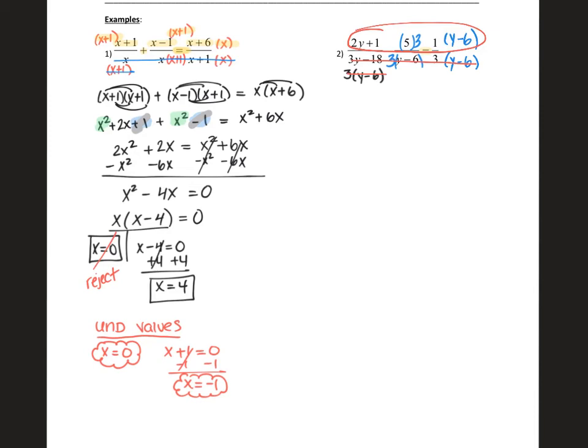So what are we left with? We're left with 2y + 1 - 15. Where did I get 15 from? Five times three. And then equals one times y - 6 is just y - 6. And then we solve. We combine any like terms that we have on the left. So here we have one and negative 15. So we have 2y - 14 equals y - 6.